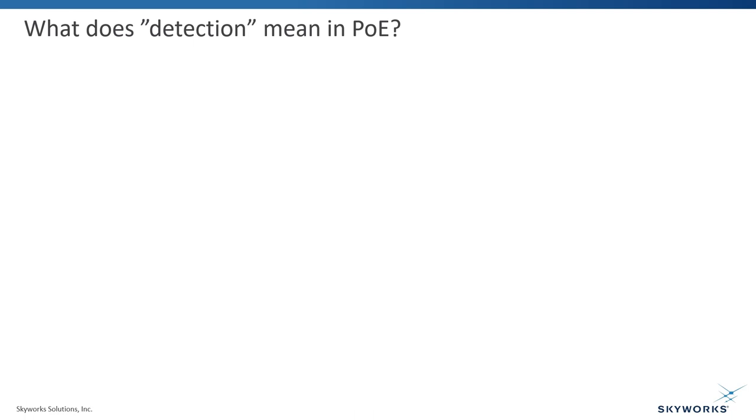First of all, let's see what detection actually means when we talk about Power over Ethernet. To make sure Power Sourcing Equipment, or PSE in short, can provide power to the Power device or PD, first it has to identify if there is any device on the other side of the cable which is capable of accepting the provided power. We call this process a detection.